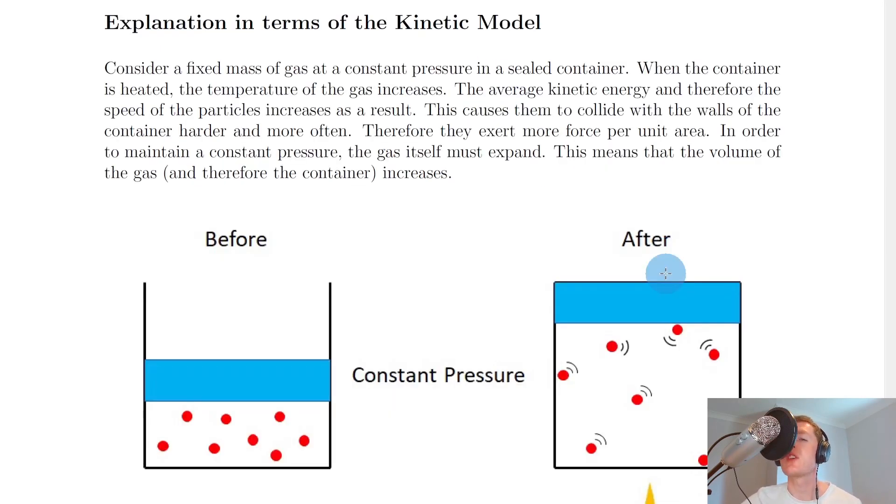Lastly, we're going to look at how to explain Charles' Law in terms of the kinetic model, i.e. the particles in a container. So consider a fixed mass of gas at a constant pressure in a sealed container. When the container is heated, the temperature of the gas increases. The average kinetic energy and therefore the speed of the particles increases as a result.